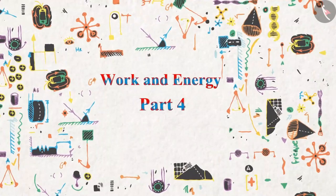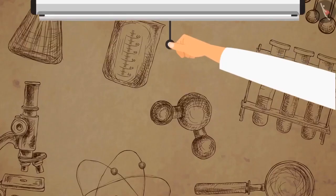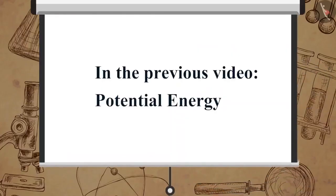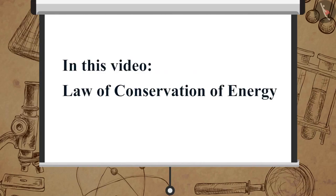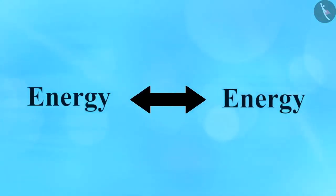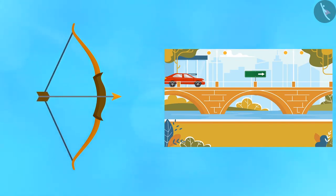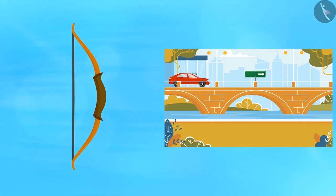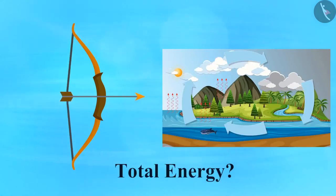Work and energy, part 4: Law of Conservation of Energy. In the previous video we learned about potential energy. In this video we will learn about the law of conservation of energy. Earlier we studied that energy can be transformed from one form to another, like the energy transformation in the water cycle, in photosynthesis, or in examples like a bow and arrow and a running car, which involve human activities to transform energy from one form to another.